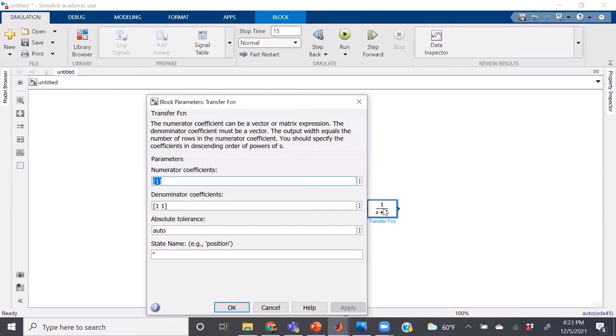For the example I'm going to do right now, we're going to assume k and tau are both equal to 1. Hit OK.